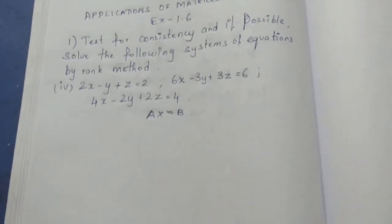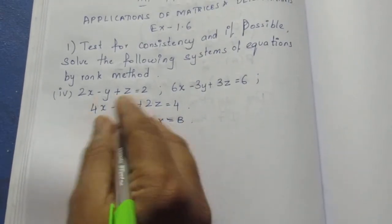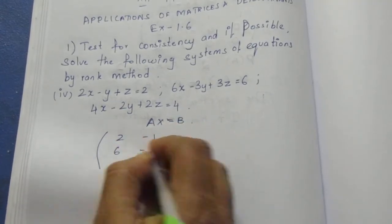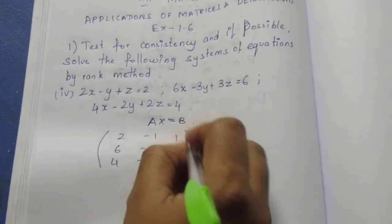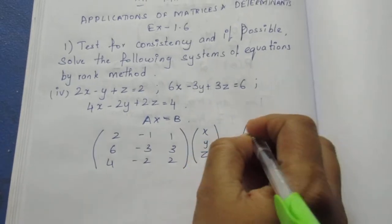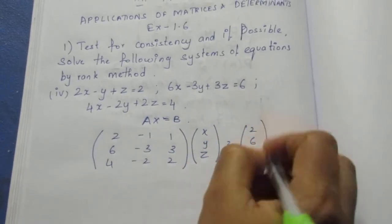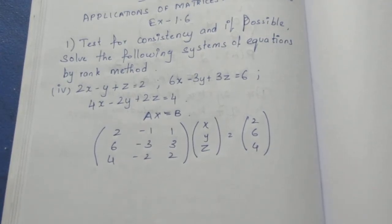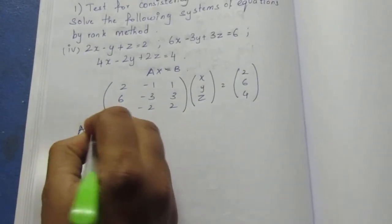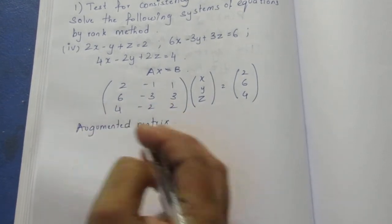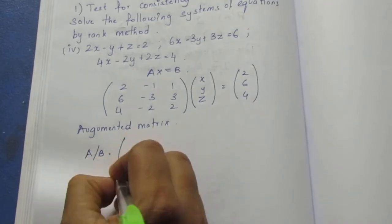I am going to add the coefficient matrix: 2, -1, 1; 6, -3, 3; 4, -2, 2. And xyz column is equal to B, which is 2, 6, 4. Now we will solve using the augmented matrix form.